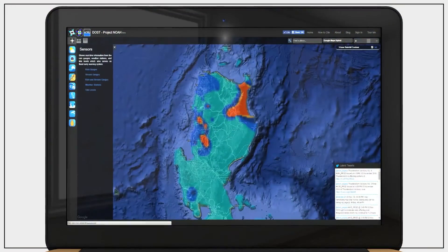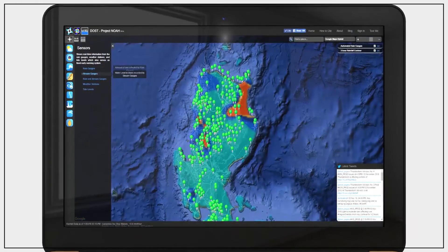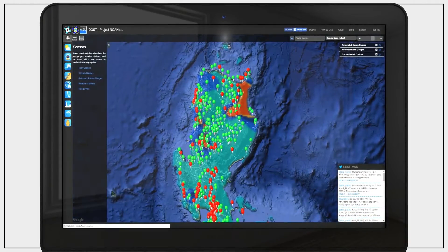On the sensors icon, you can select rain gauges, stream gauges, and weather stations options to view information from the devices.